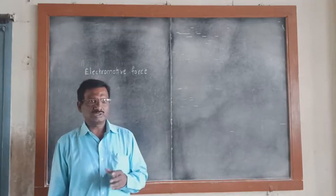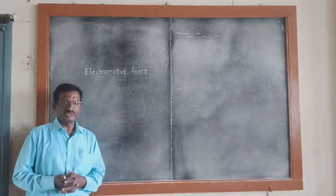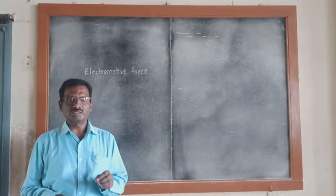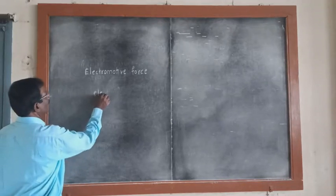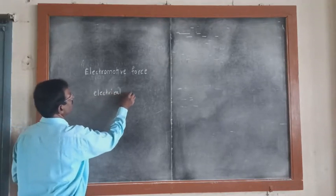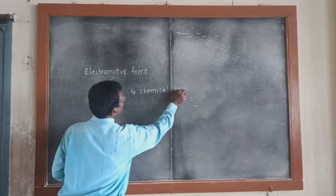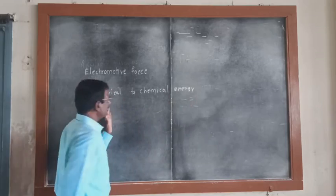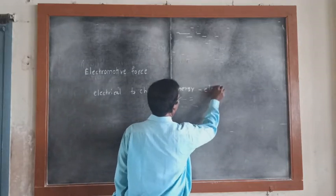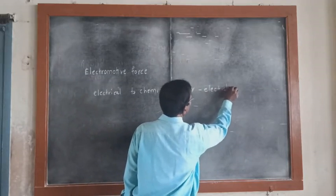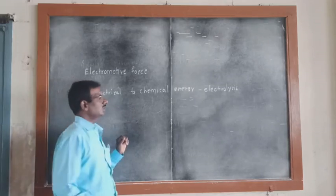First of all we have to discuss about electrolytic cell and electrochemical cell. A process in which electrical energy is converted into chemical energy is called as electrolysis. And the device in which electrolysis is carried out is called as electrolytic cell.